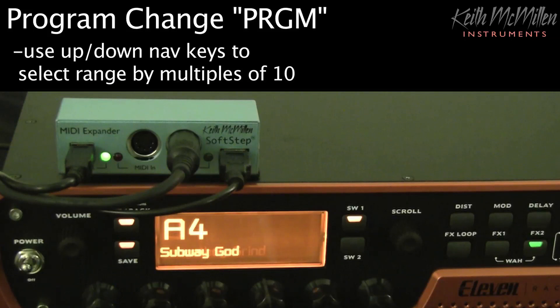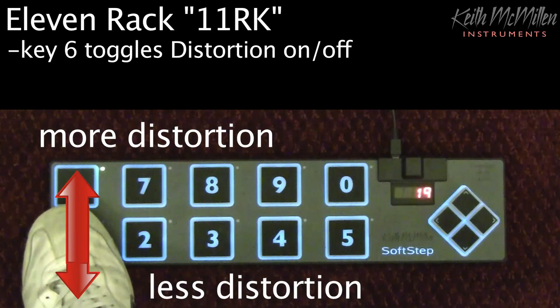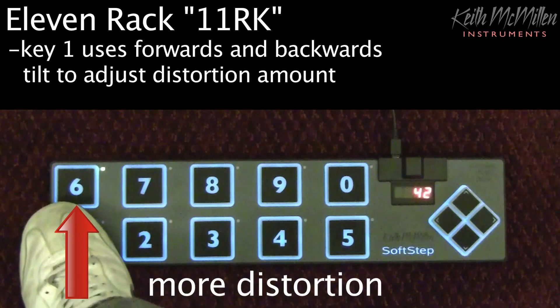Next, select the 11-rack preset titled 11-rk. Key 6 toggles distortion on and off. Key 1 controls our distortion amount using forwards and backwards tilt. Press your foot flat over key 1 and tilt forward to increase distortion amount. Tilt backwards to decrease the amount.